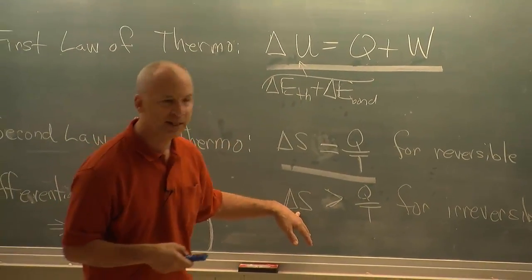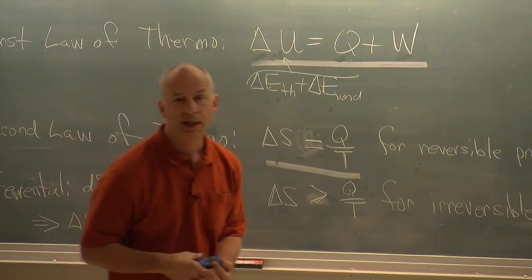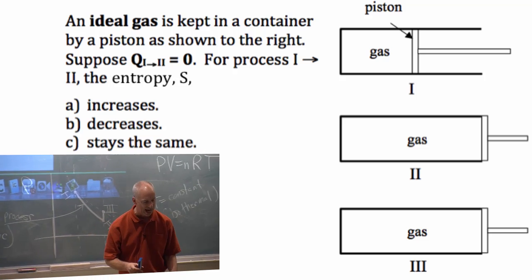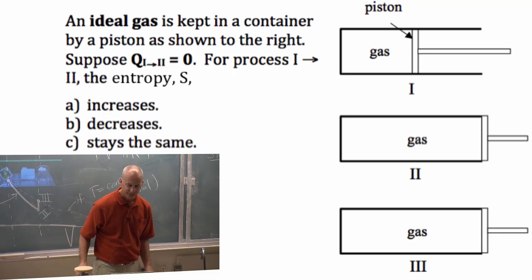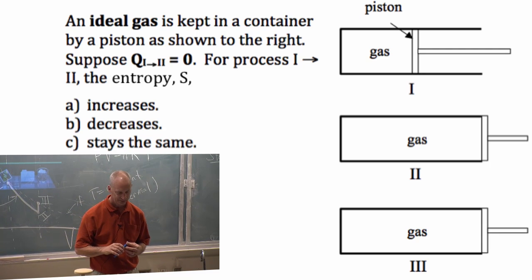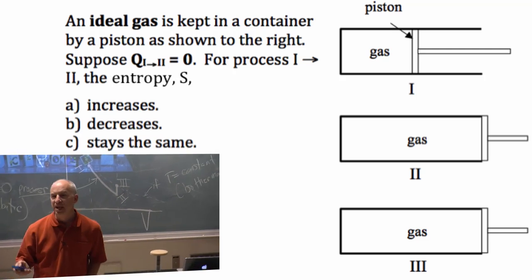If the process is irreversible, then the entropy change is bigger than Q over T. Well, I wanted to ask you these last couple of questions. So I think I'm going to ask this one first and give you about a minute.